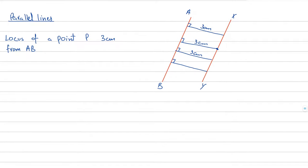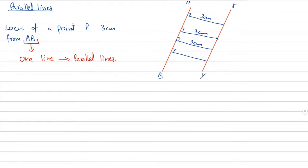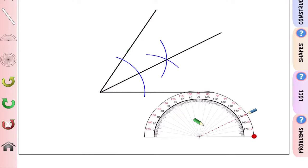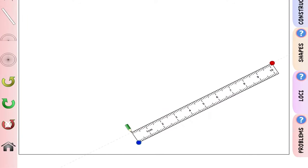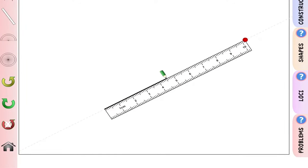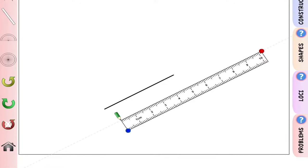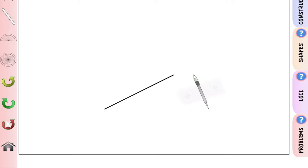We construct a pair of parallel lines when asked to find the locus of a point at a fixed distance from one line. Now let's learn how to make a parallel line using the app. Draw a line of random length — say 5 centimeters — and call it AB.